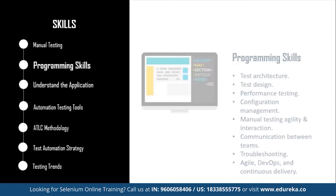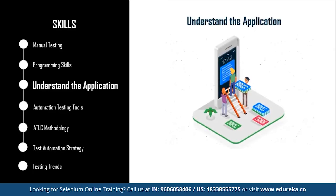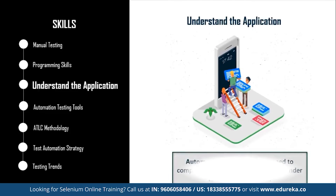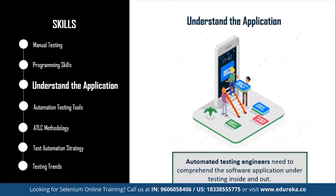The next step is to understand the application. Common application details every automation tester needs to know include which programming languages were used to develop the application, what platform it is built on, which databases are involved, whether there are web services or APIs connected to different parts of the system, and many more. Make sure you are completely thorough with the application you are going to test via automation testing.